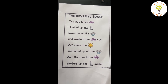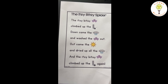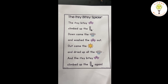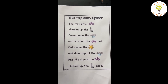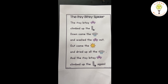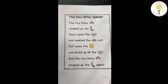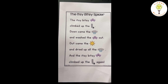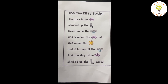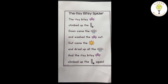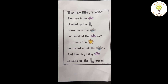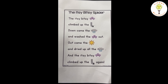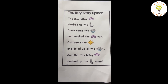We can see sequencing in nursery rhymes also. When we sing rhymes, we follow the order — we can't change the order. For example, Itsy Bitsy Spider: Itsy bitsy spider went up the water spout. Down came the rain and washed the spider out. Out came the sun and dried up all the rain. Itsy bitsy spider climbed up the water spout again.